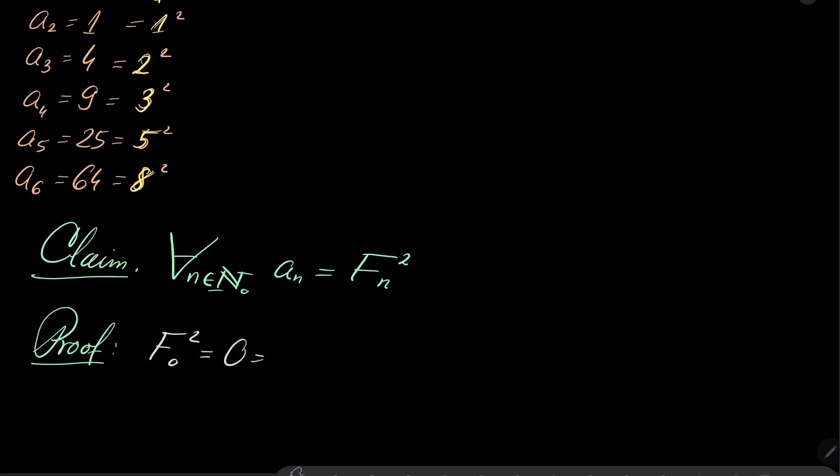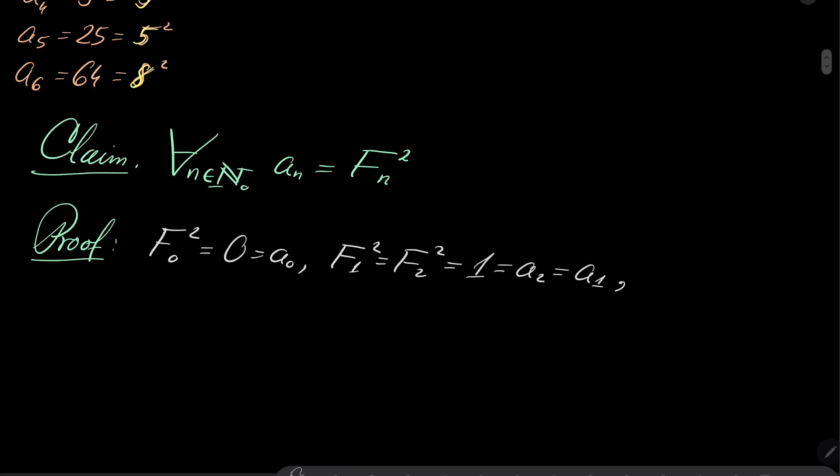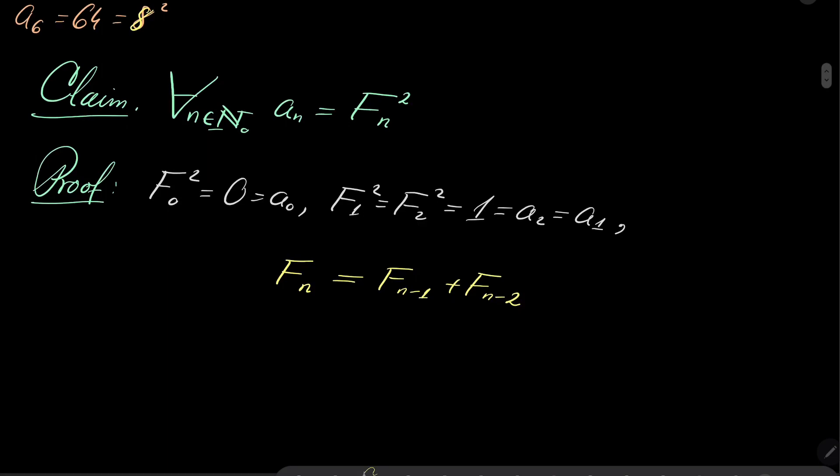Well, the beginning is very simple. F_0 squared is 0, which is a_0. F_1 squared and F_2 squared is 1, which is also a_2 and a_1. So no problem there. And now, notice the following. The Fibonacci sequence has this well-known recursion: F_n = F_{n-1} + F_{n-2}. And also, I will write the very same equation, but with n-1 instead of n.